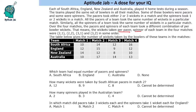The table gives the number of wickets taken by the bowlers of these teams in the matches. Four matches can happen in any order, so we have to find out in which match how many wickets were taken by spinners and pacers. We are not given the number of pacers or spinners either — we have to solve for that.